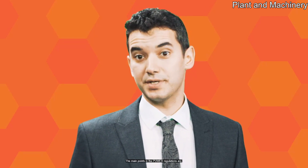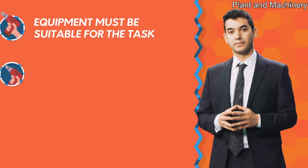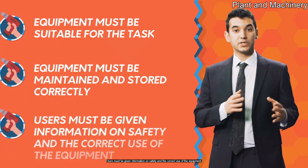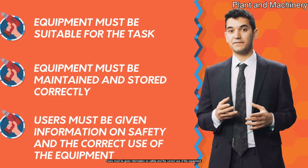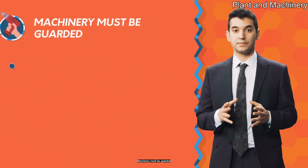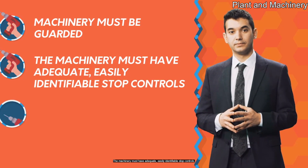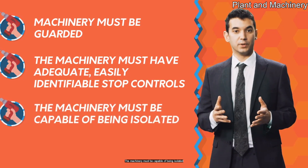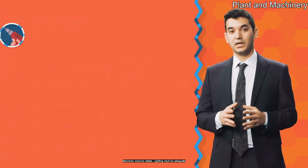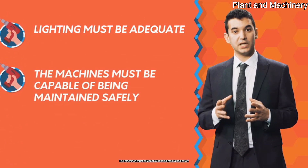The main points in the PUWER regulations are: equipment must be suitable for the task; equipment must be maintained and stored correctly; users must be given information on safety and the correct use of the equipment; machinery must be guarded; the machinery must have adequate, easily identifiable stop controls; the machinery must be capable of being isolated; machines must be stable; lighting must be adequate; and the machines must be capable of being maintained safely.